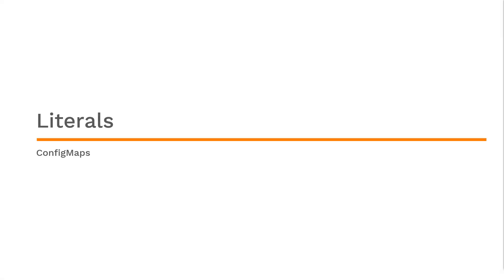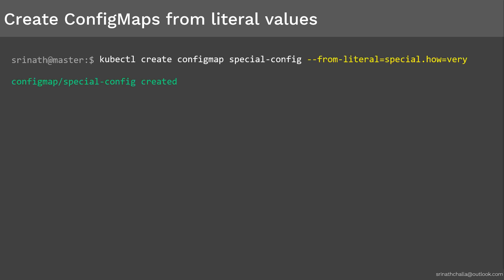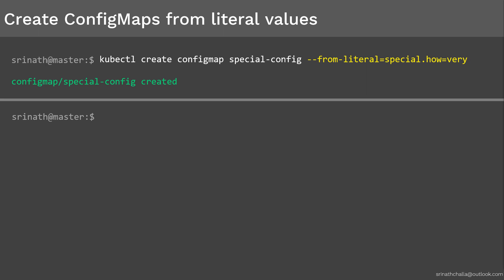In the next two slides, we are going to create a ConfigMap using literal values. Once you have the ConfigMap in place, you can create the pod spec with it, and finally verify the data. To create the ConfigMap from literal values — meaning key-value pairs straight from the command line — we use the kubectl create configmap command. As you can see, it starts with kubectl create configmap, followed by the ConfigMap name and finally the data. We use the --from-literal option because we are passing key-value data pairs directly from the command line. Here the key is special.how and the value is very.